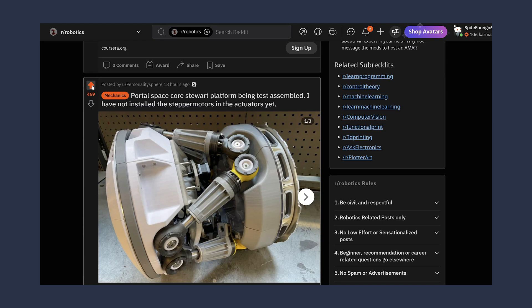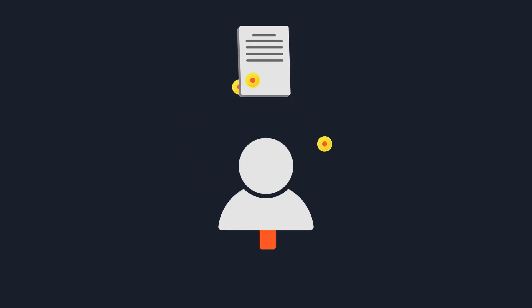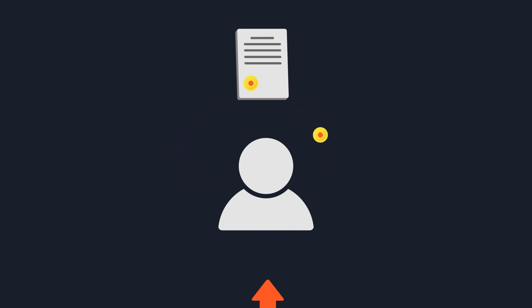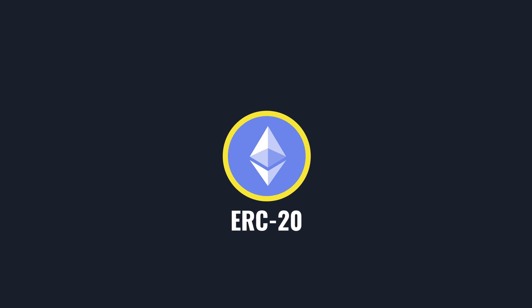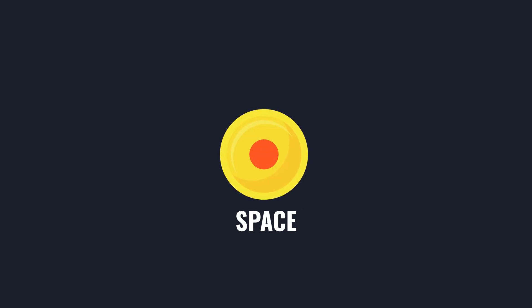Karma points on Reddit are earned when a user upvotes another user's comment or post. These points are non-transferable and visible to other users. Typically, the higher the karma score, the more people have upvoted their content — and the more credible the user is in the given community. Now imagine if we can commodify these karma points as an asset on the blockchain in the form of tokens. This is what JoinSpace implements: an upvote point system logged on the blockchain, where each point can be seen as a proportion of ERC20 tokens awarded to the user.